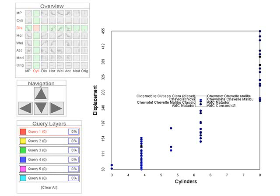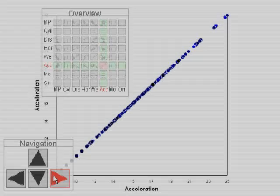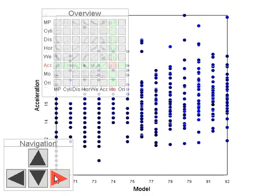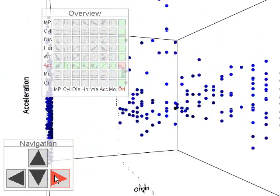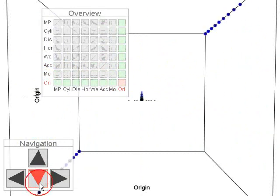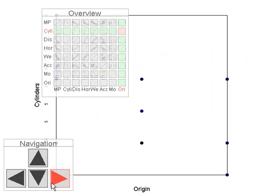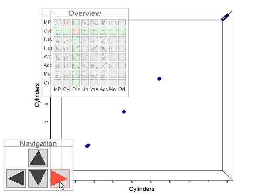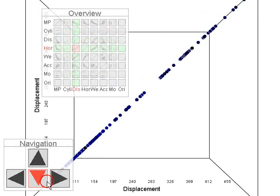A set of simple navigation techniques allow for controlling the position in the scatterplot matrix. The keyboard or the navigation bar can be used for stepping one position in the matrix at a time. Movement is performed as an animated 3D transition from one scatterplot to another where one dimension remains constant.